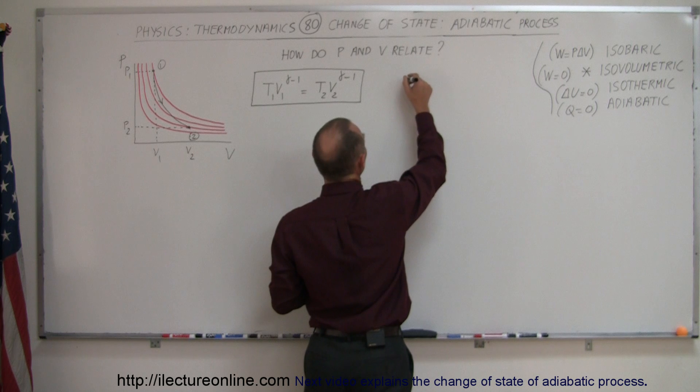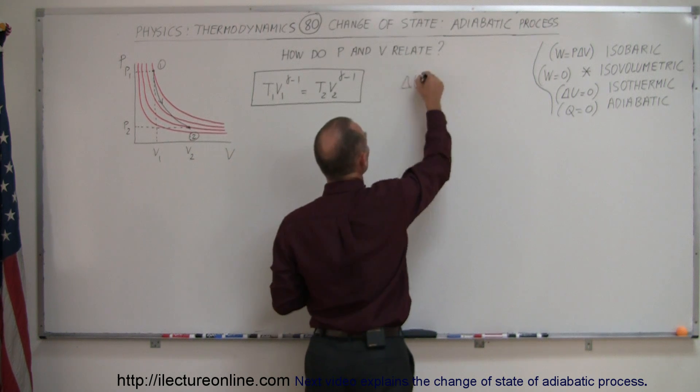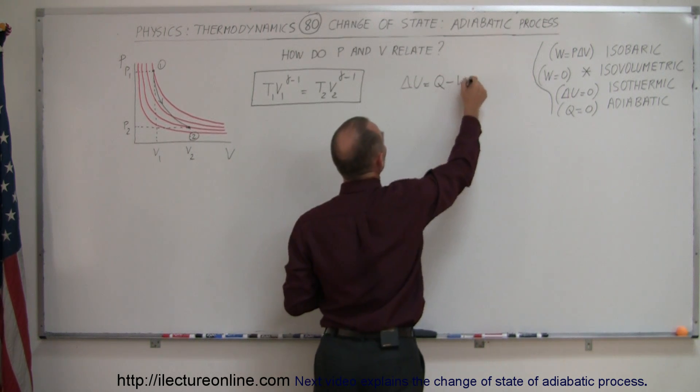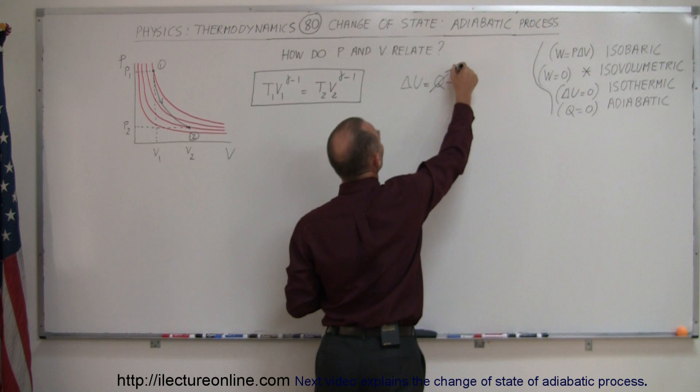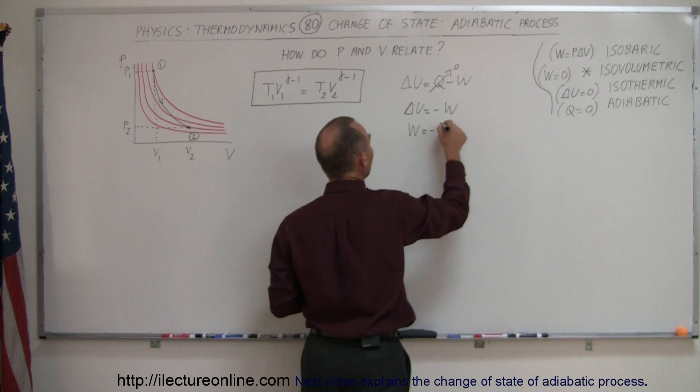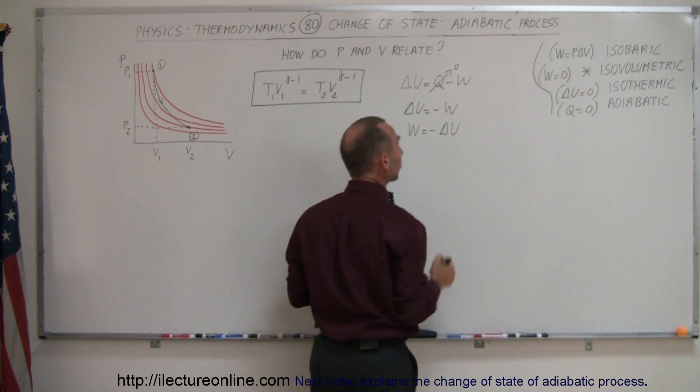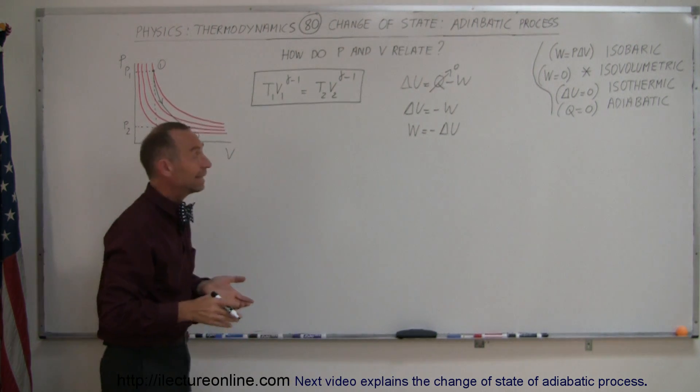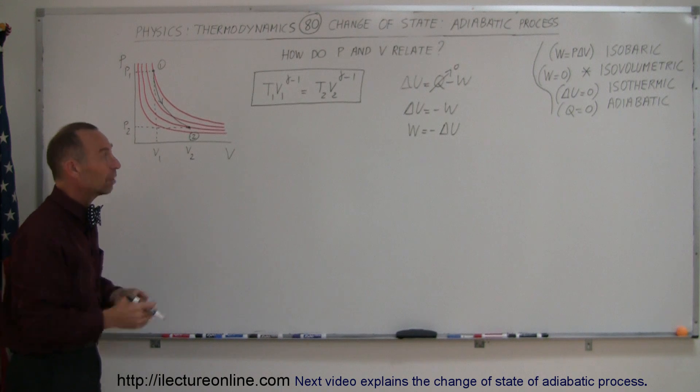When we look at the first equation of thermodynamics we can say that delta U is equal to Q minus W, and since Q is equal to zero, that means delta U is equal to minus W. In other words, all of the energy that it needs to do work came from within the energy of the gas.